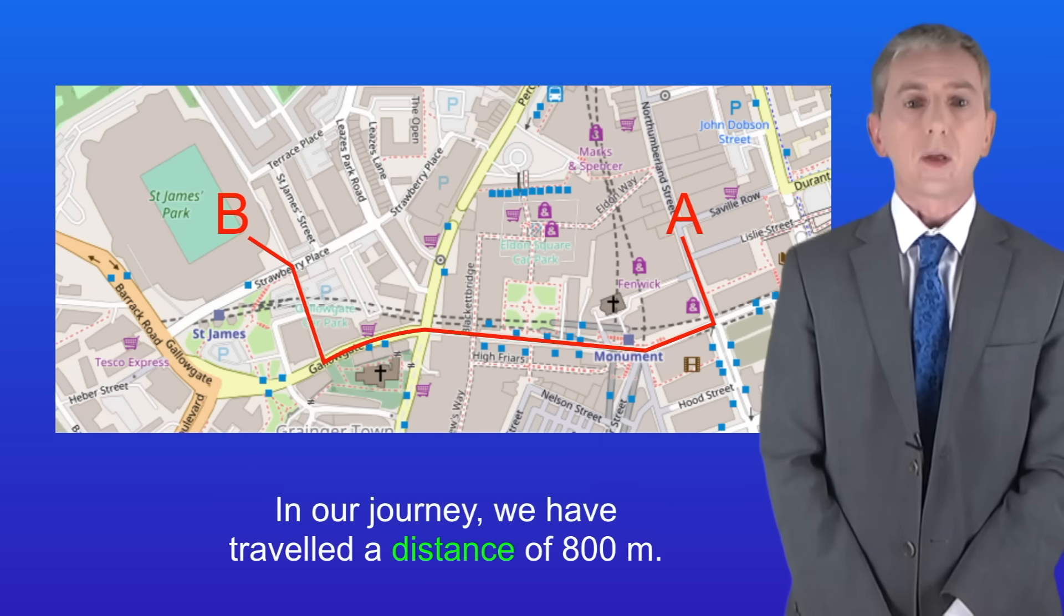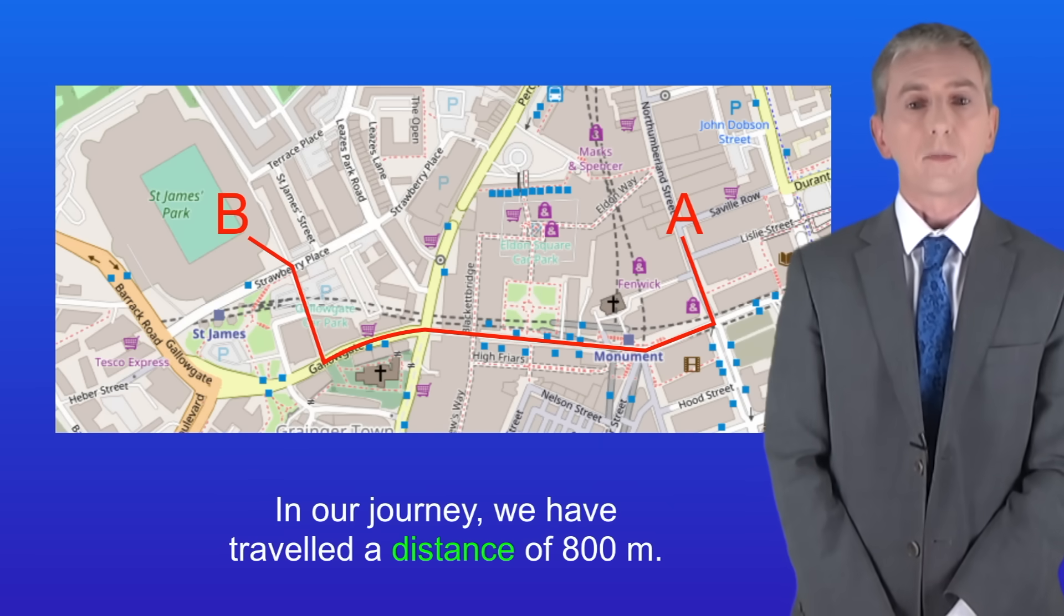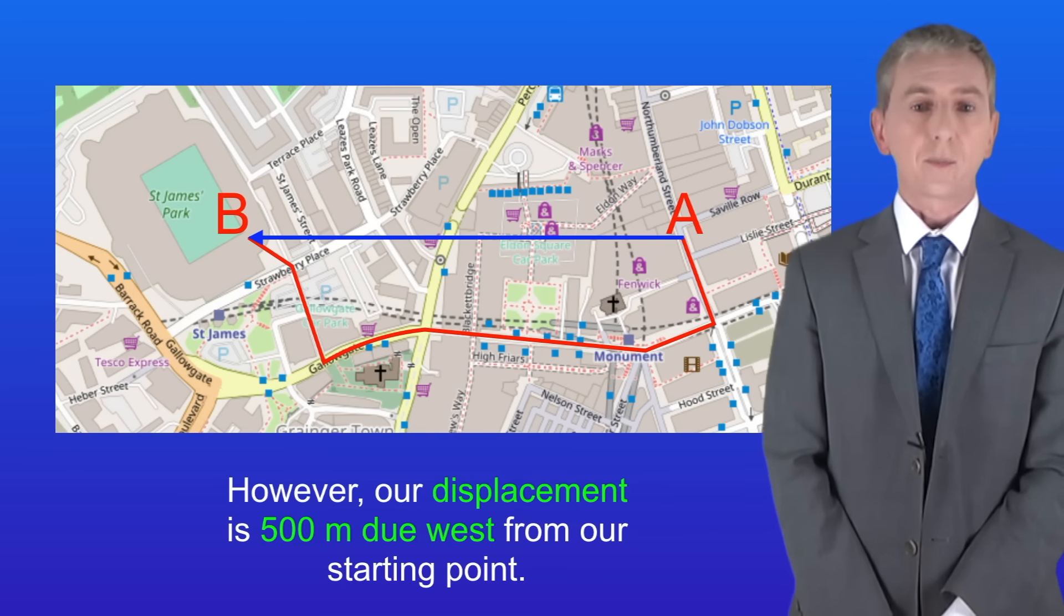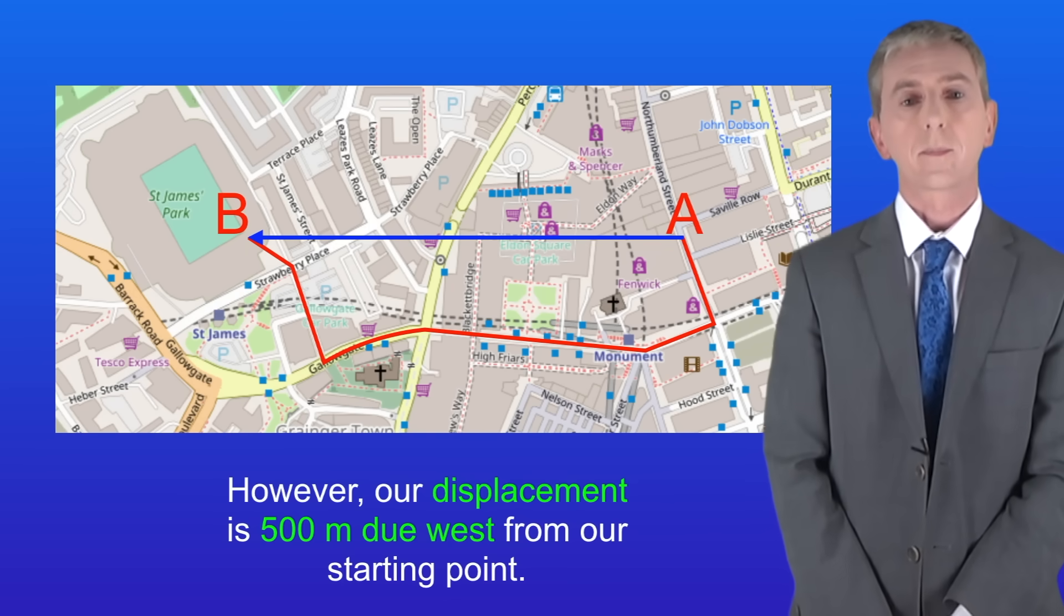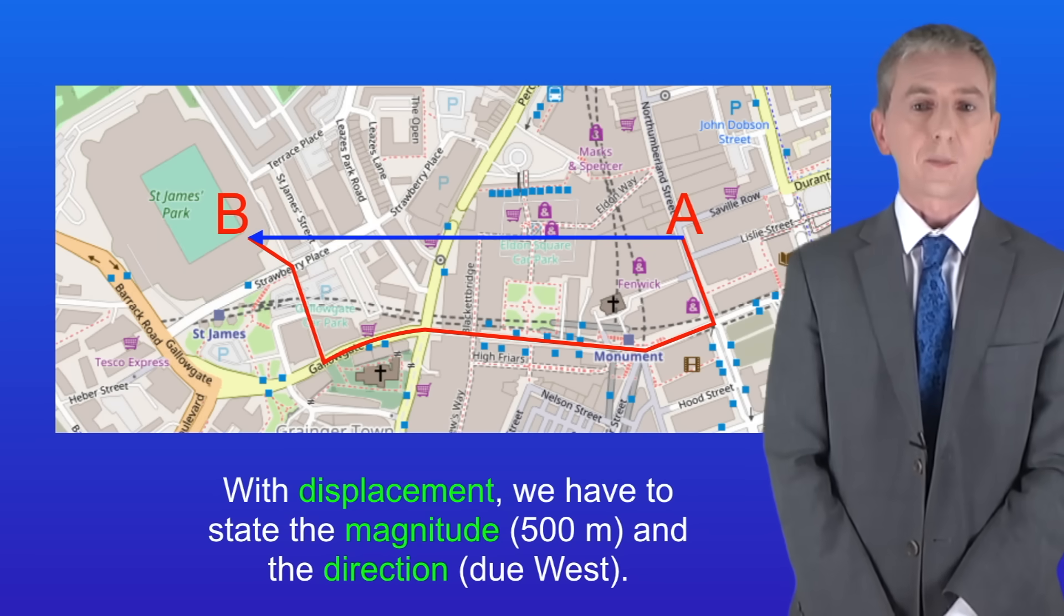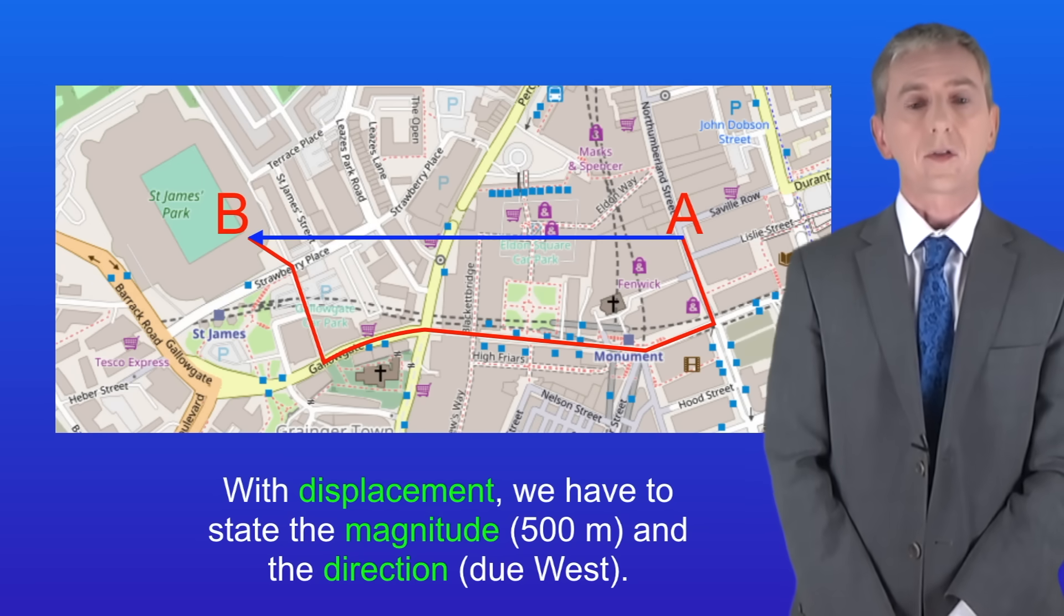So in our journey, we've traveled a distance of 800 meters. However, our displacement is 500 meters due west from our starting point. Can you see that with displacement we have to state the magnitude, in this case 500 meters, and the direction, which in this case is due west.